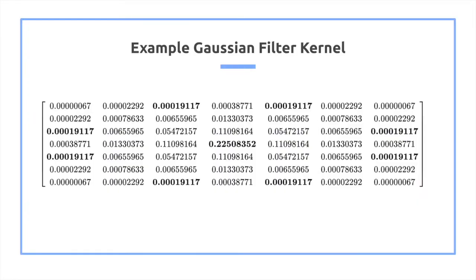Here's an example of a Gaussian filter kernel function. You can see the center one is 0.22, while the outer ones have significantly less of an impact on the final result.